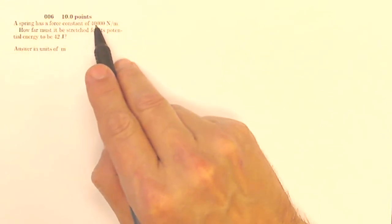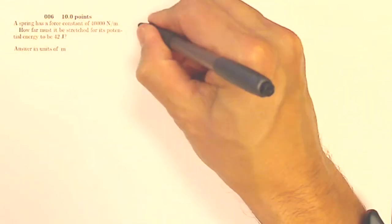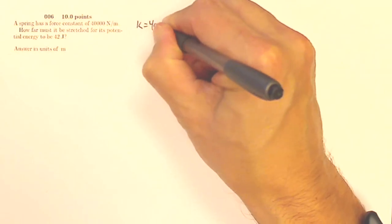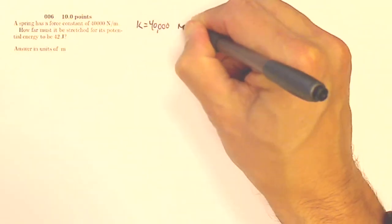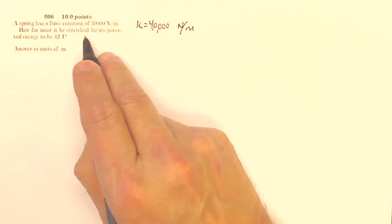A spring has a force constant of 40,000 newtons per meter. That's K equals 40,000 newtons per meter. How far must it be stretched for its potential energy to be 42 joules?